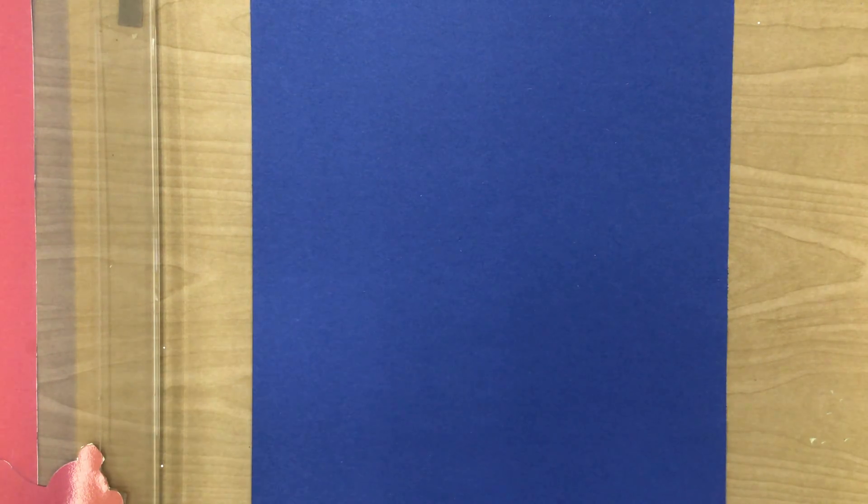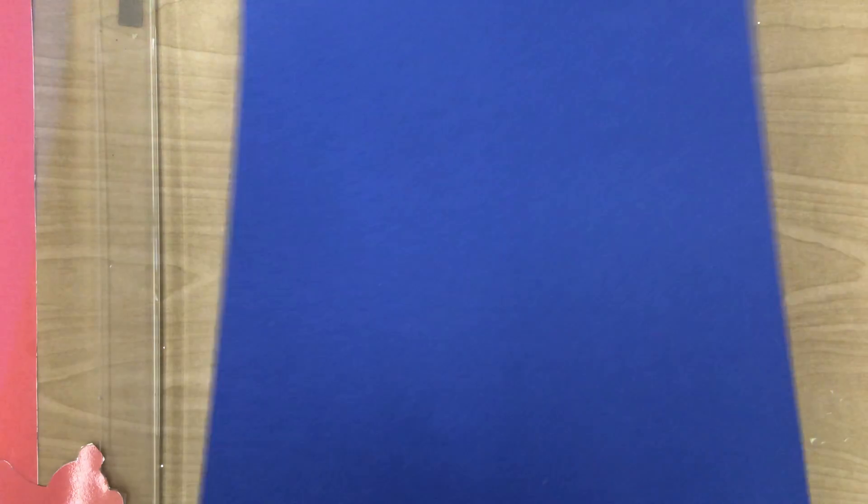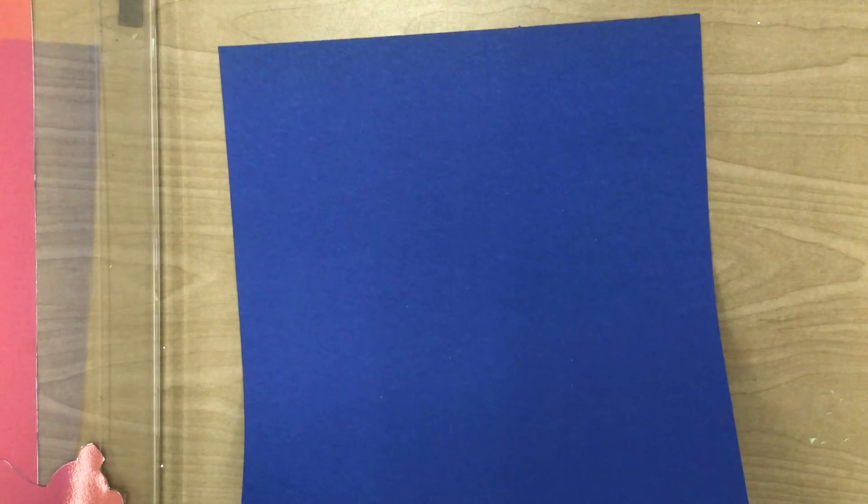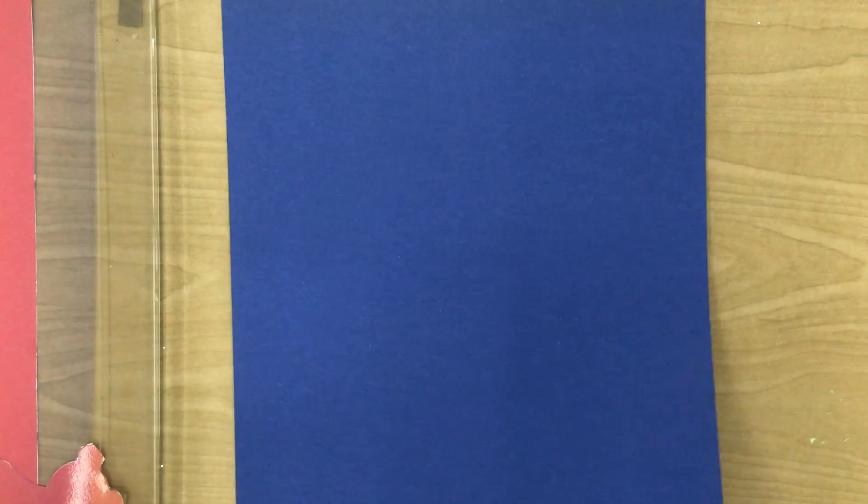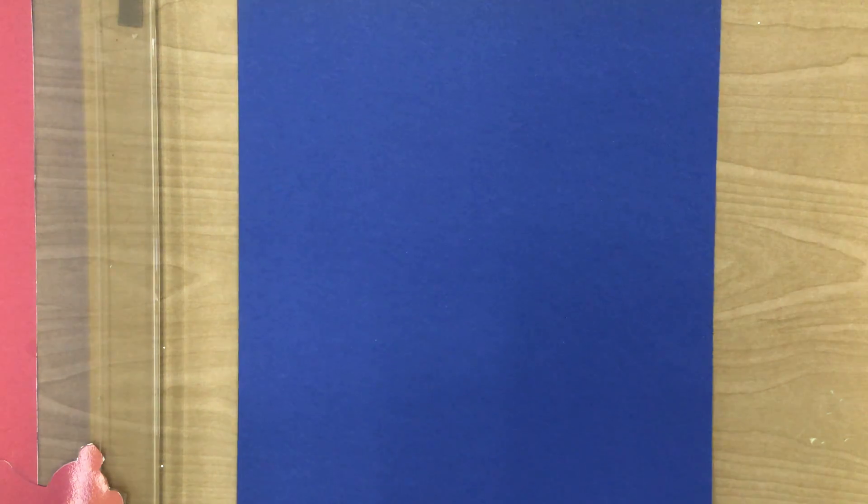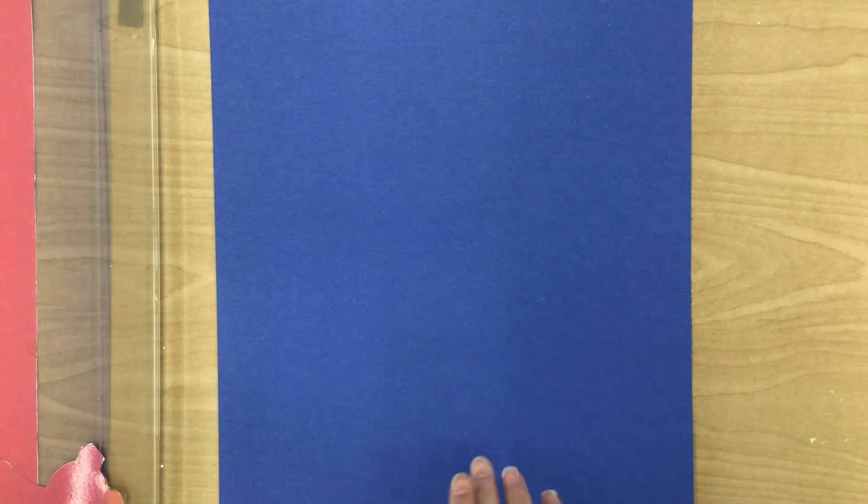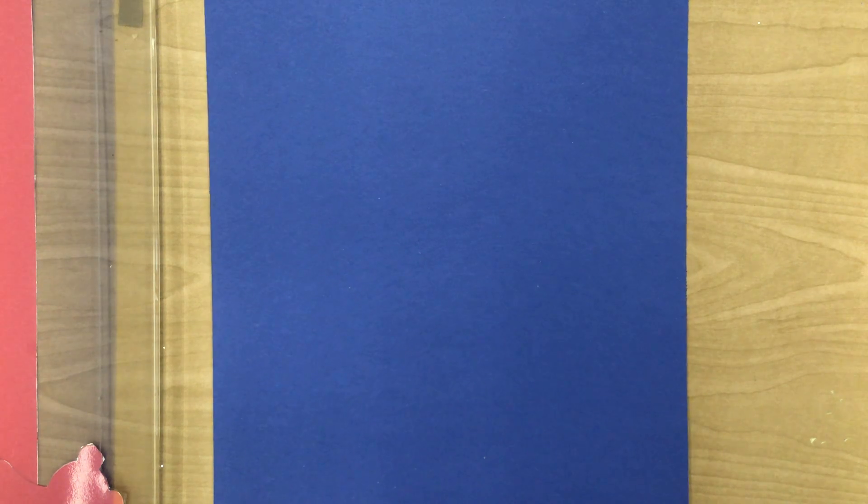The first step you need to do is get a big piece of paper. I prefer to use dark blue. Black works too, but I like dark blue because it's kind of wintery feeling to me. And the dark color is a good contrast to the white of the snow on the snowman.